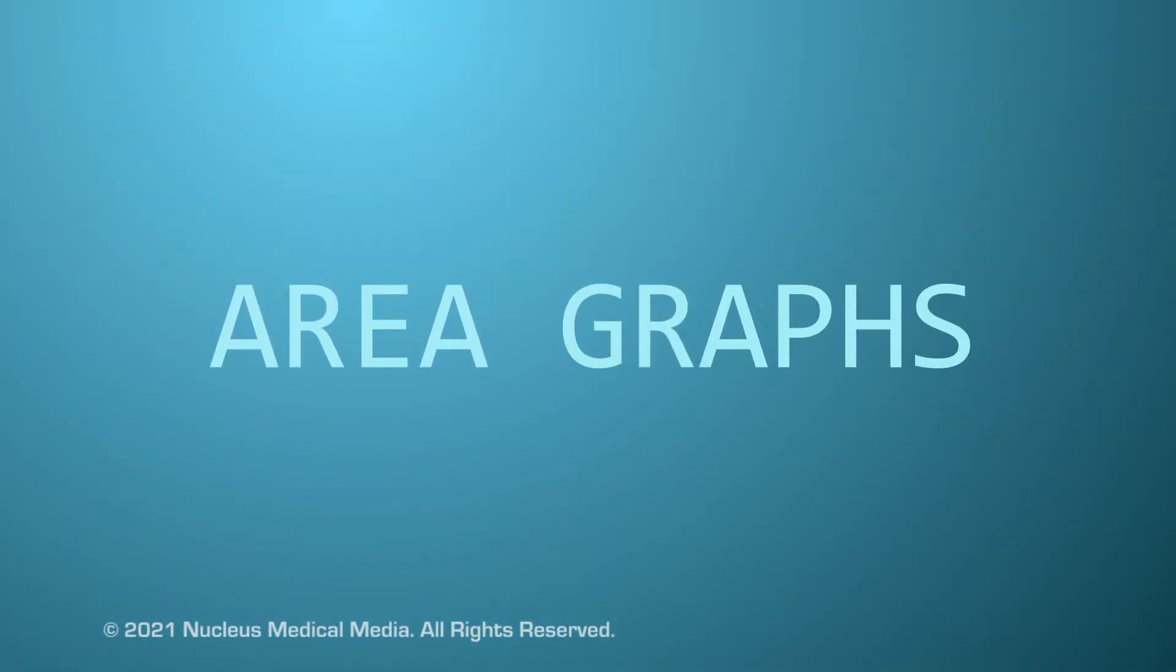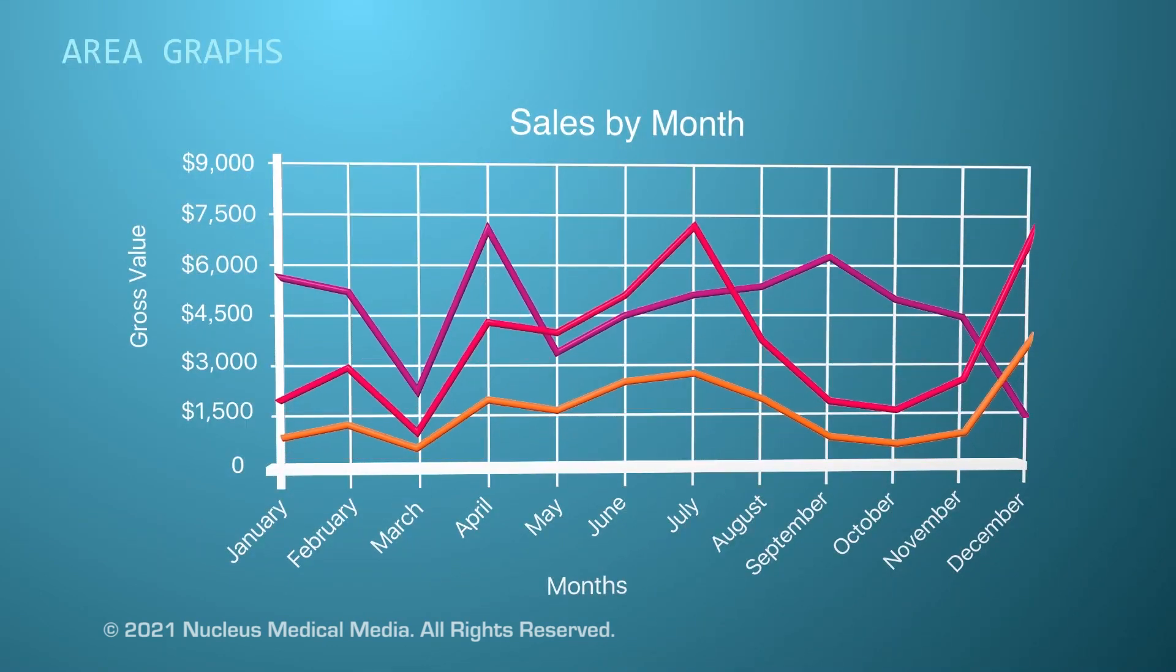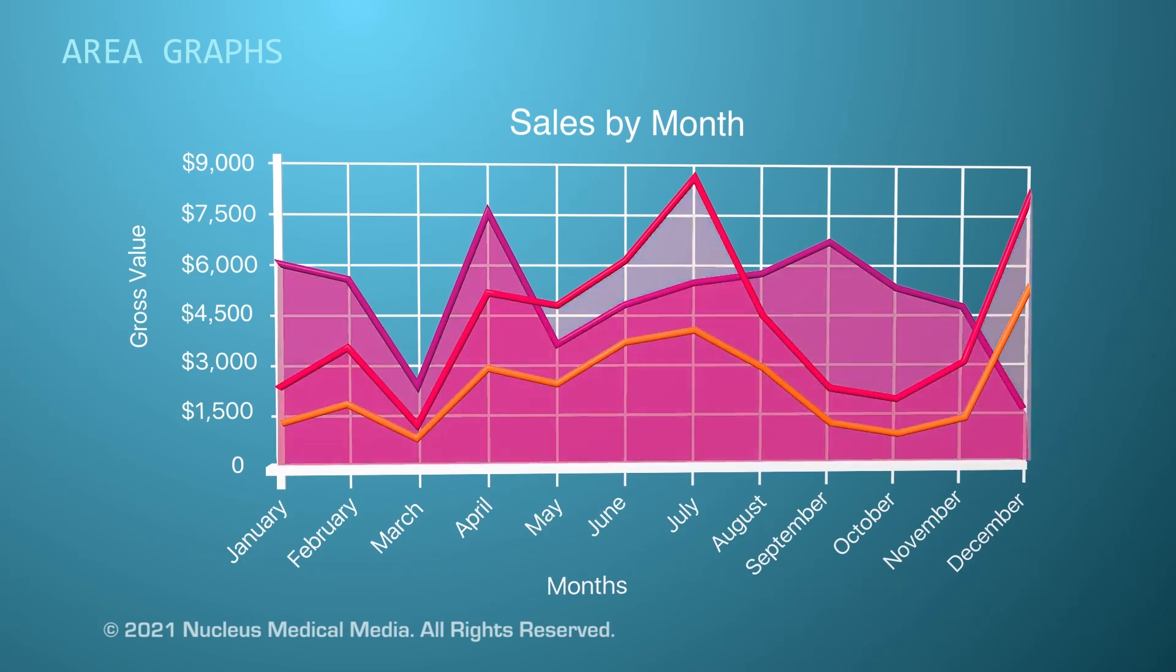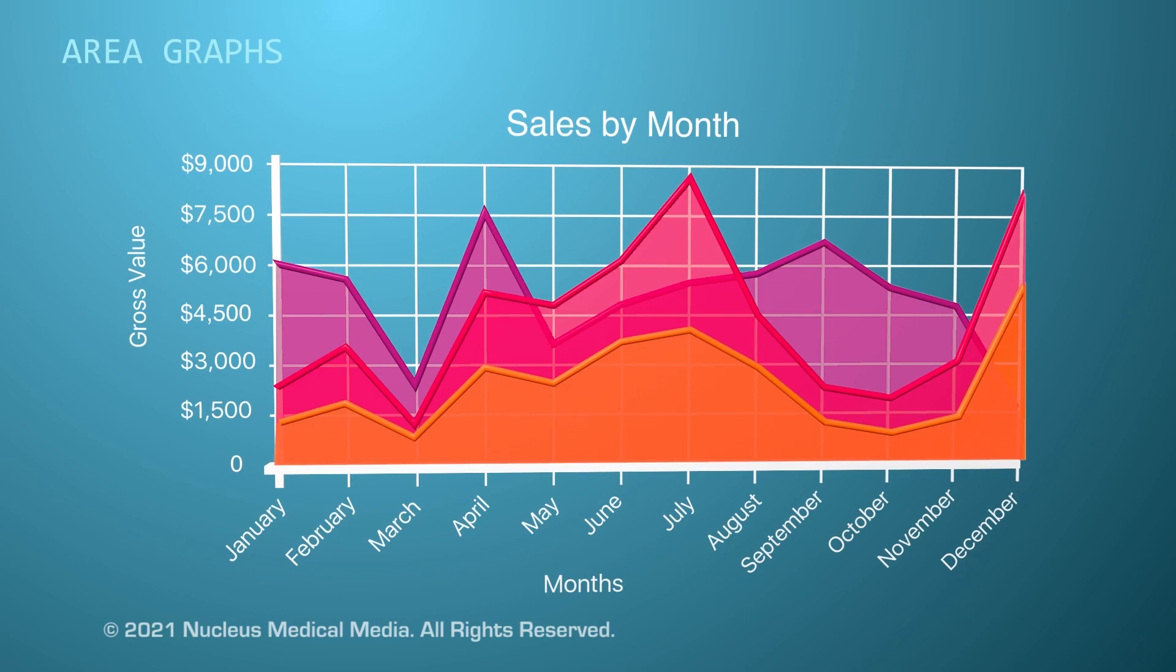Next up are area graphs. Area graphs are a combination of multiple line graphs. When making an area graph, each line graph usually has a different color underneath with a color key that identifies what each line represents. Area graphs are useful for comparing data sets and identifying trends such as what items are hot sellers or weak sellers in each month.